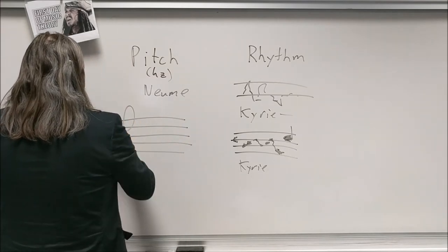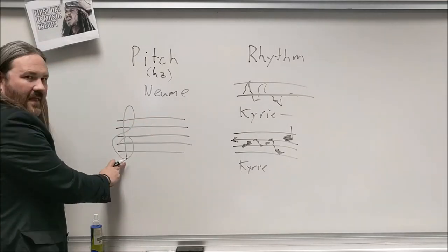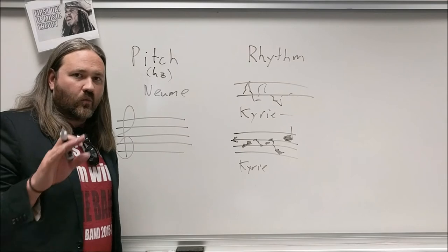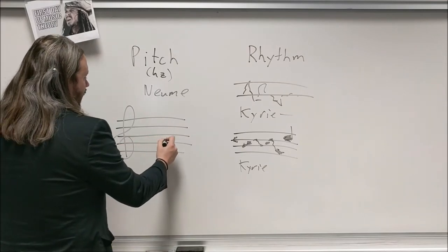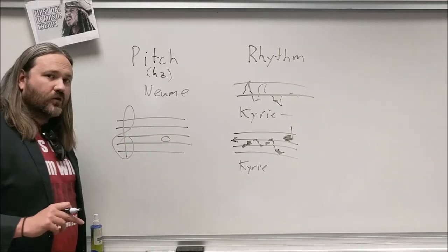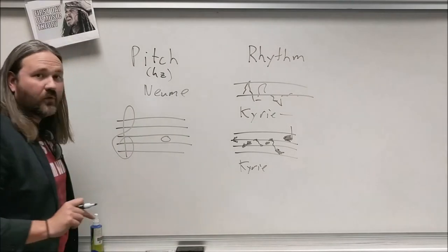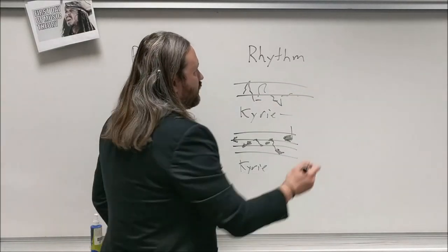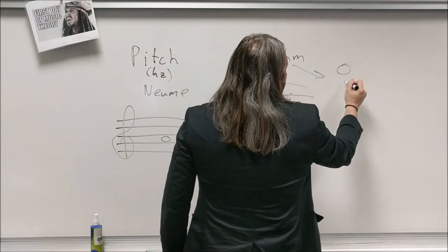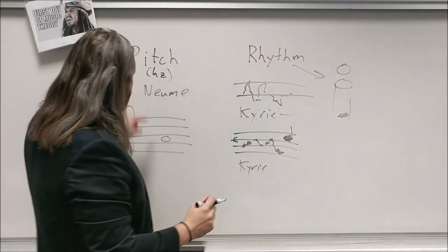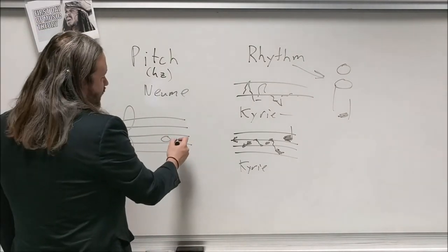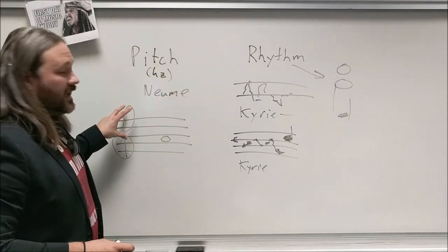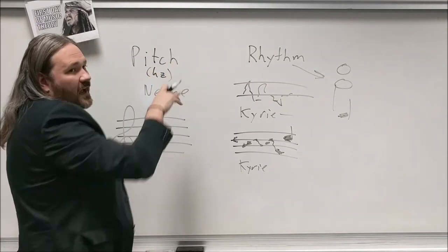The way the modern staff works, much like the pneumatic staff, is we have five lines and a sign at the beginning of the music — a clef — that tells us what notes are on which lines and spaces. A note on a given space might be an A, and the way the note looks tells us the rhythm — how long to play it for. So we have two elements that combine: the note's appearance tells us rhythm, and its position on the staff tells us the pitch.